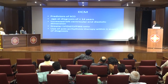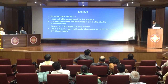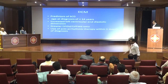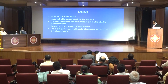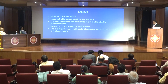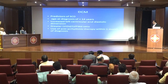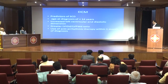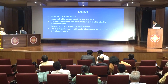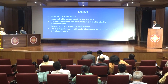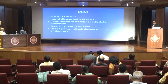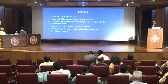Predictors of sudden cardiac death in dilated cardiomyopathy include: age at diagnosis less than 14 years, increased LV end-diastolic dimension, greater LV IDD to LV posterior wall ratio, and if anti-arrhythmic therapy is required within one month of diagnosis.